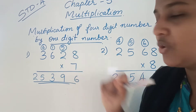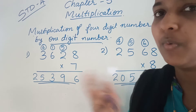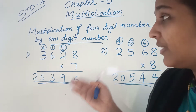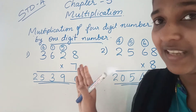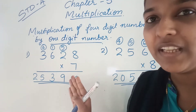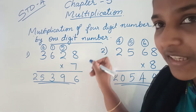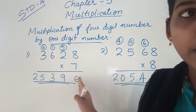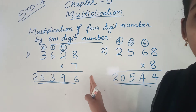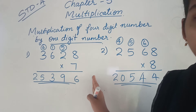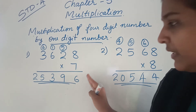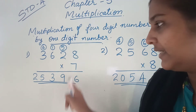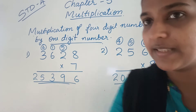First, 7 into 8. What is 7 into 8? 7 eights are 56. From 56, you write the number 6 here, then 5 carry over to the next place.